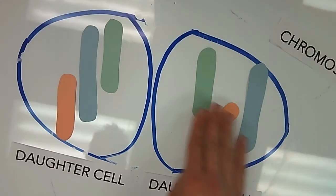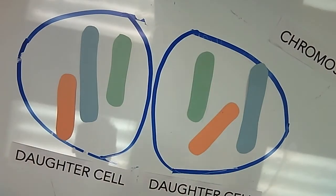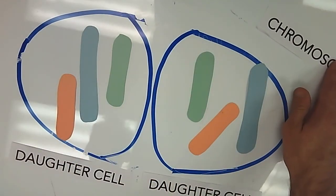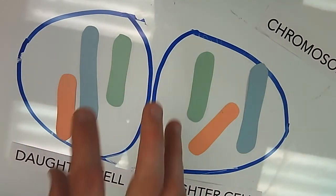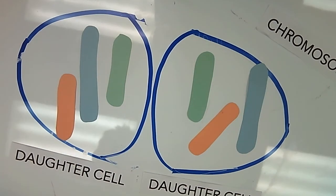Now one thing to keep in mind is that these cells, even though maybe their shape might be a little bit different, they are genetically identical. Which means that they have the exact same copies of DNA in them.